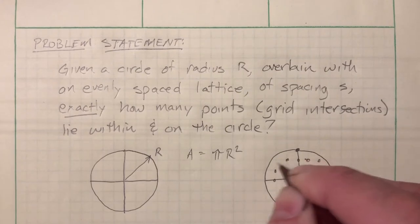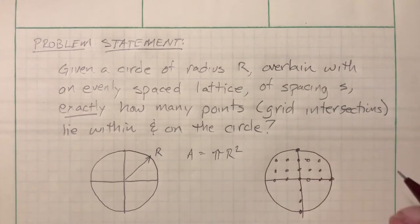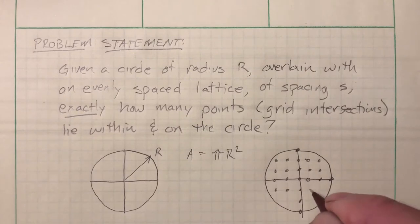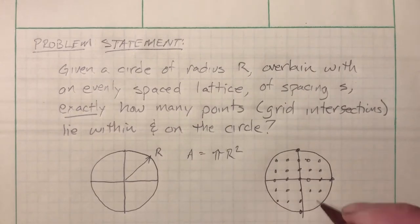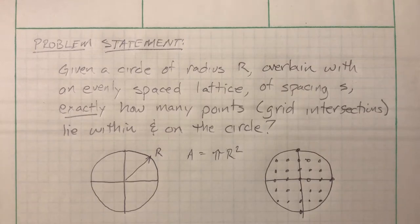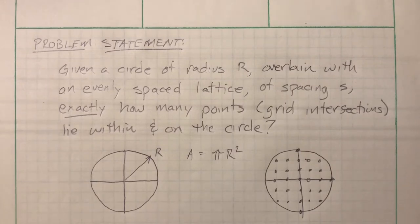Counting is great when the circle is small, but I had a particular problem where I wanted a circle of radius 100 meters with a lattice grid spacing of five centimeters. That's too much work to count manually — so I needed a way to compute it, and that's what this video is for.